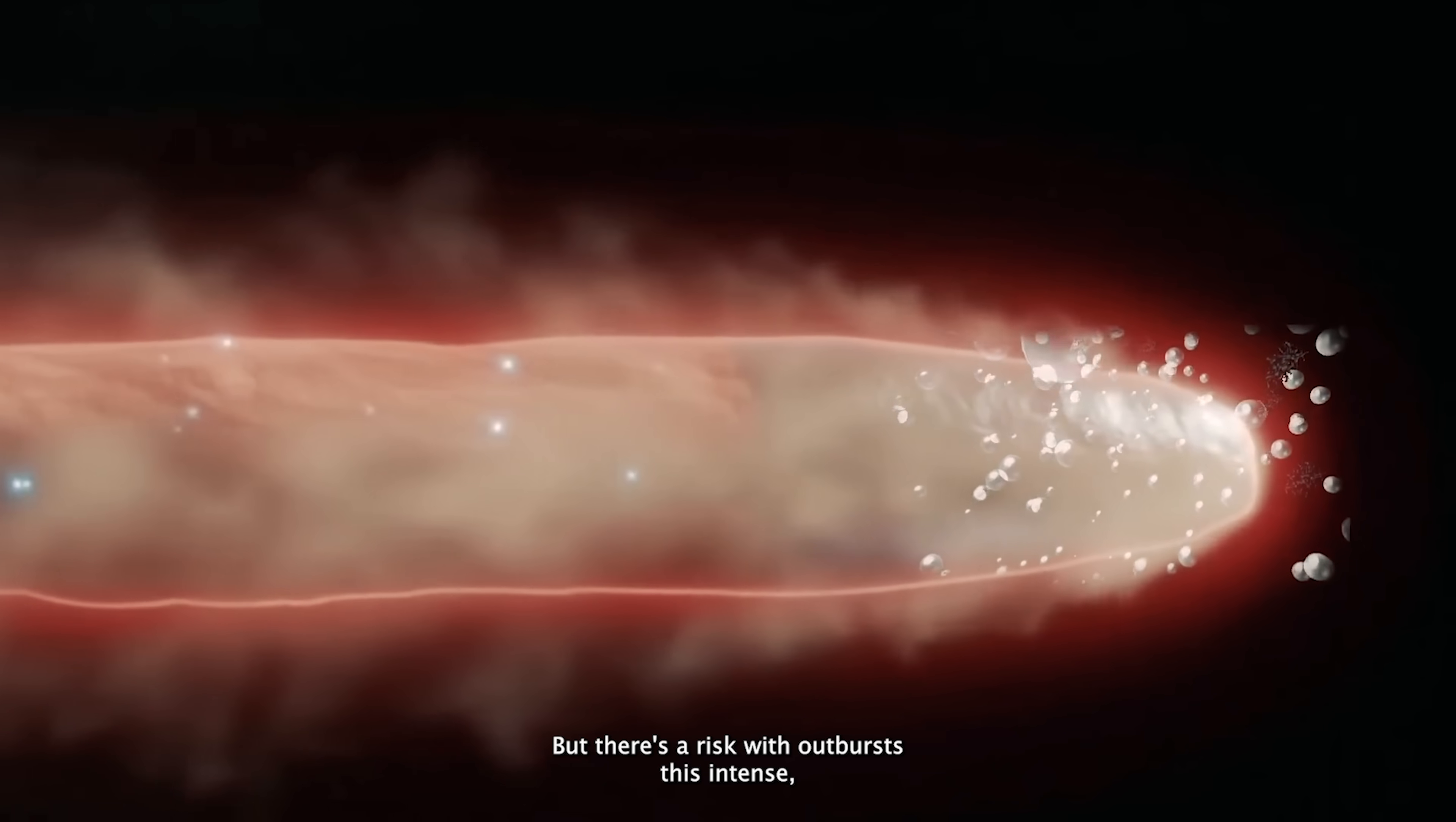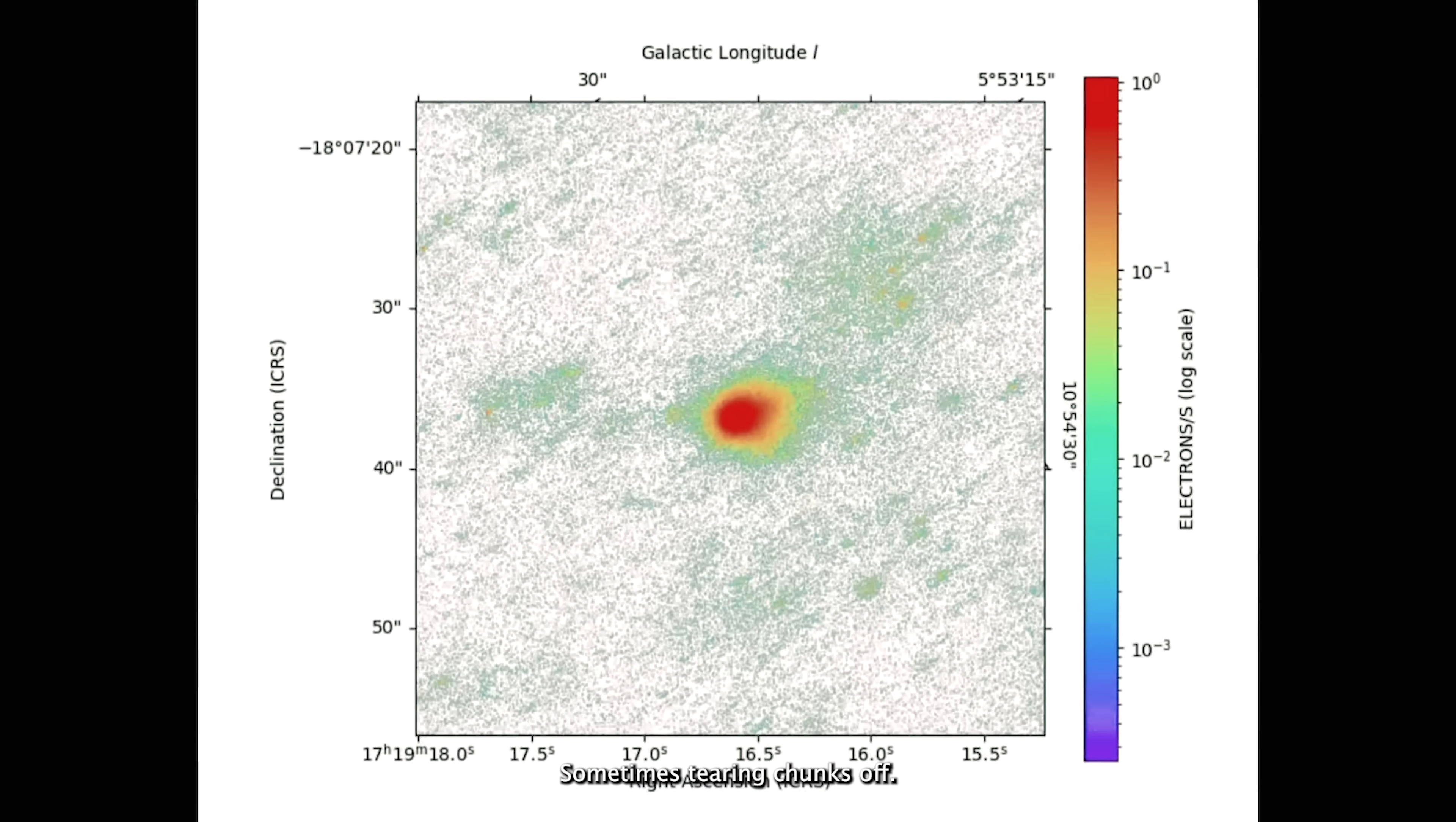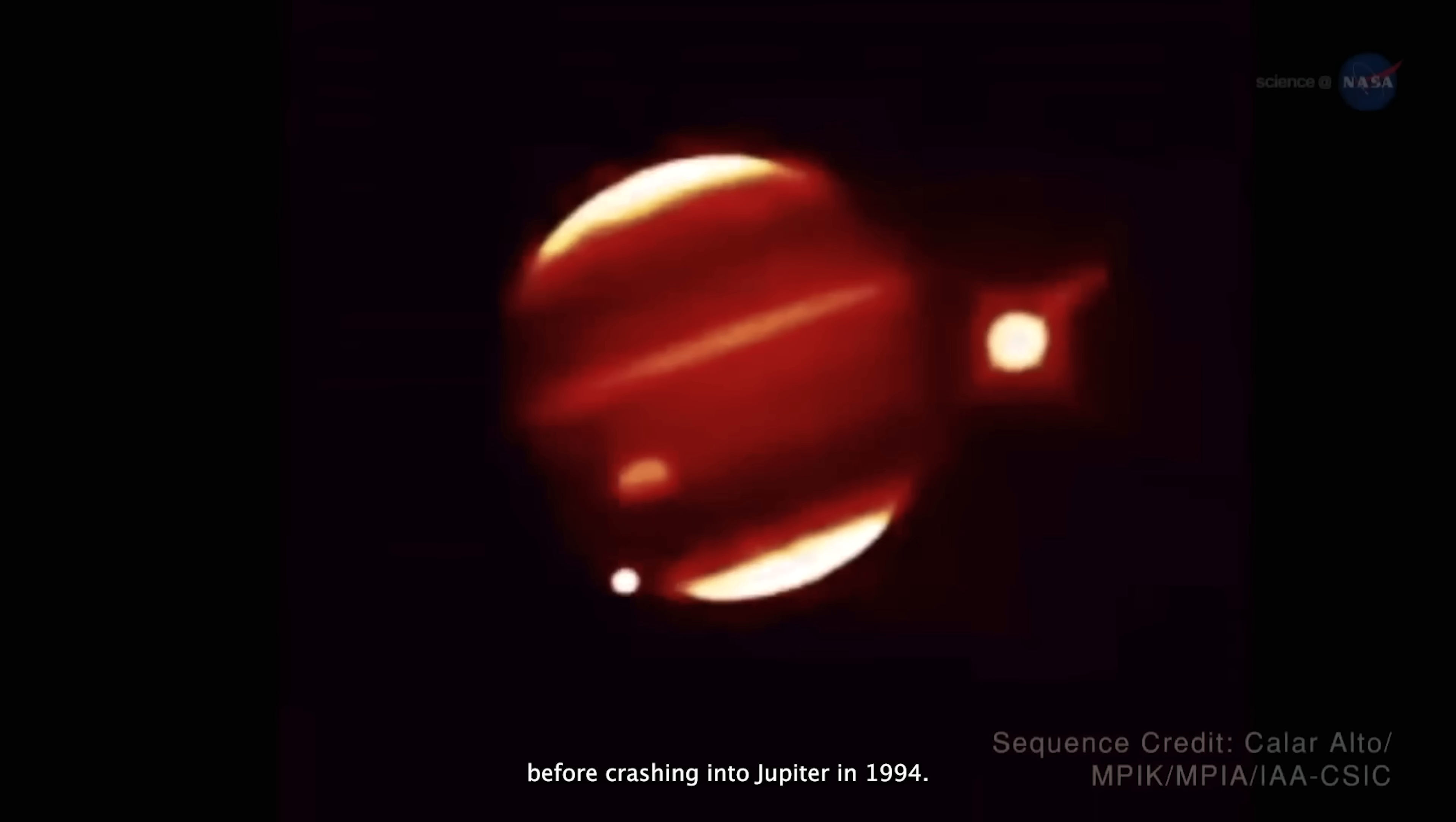But there's a risk with outbursts this intense. The pressure from all that escaping gas can destabilize the comet's core, sometimes tearing chunks off. Astronomers have witnessed this kind of fragmentation before, famously with comet Shoemaker-Levy 9, which broke into several pieces before crashing into Jupiter in 1994.